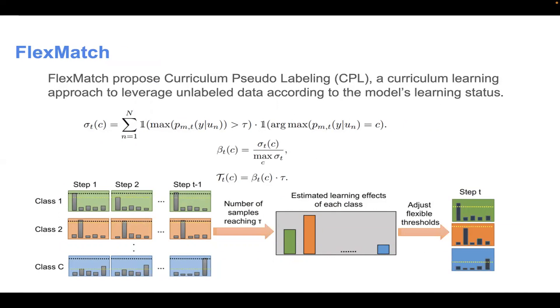To solve this problem, FlexMatch proposes curriculum pseudo labeling to dynamically choose the threshold.